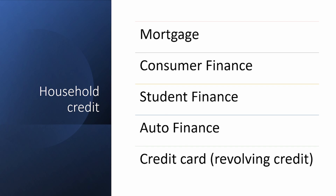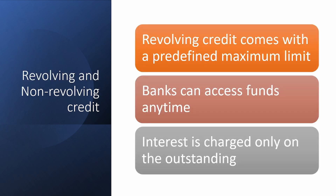Student finance lets students take loans to fund their education. Auto finance covers buying a car. Credit cards are a different kind of household credit — they are revolving in nature. Unlike mortgage, consumer finance, or student finance where you receive the entire loan amount upfront, with a credit card you don't get all the money at once. You have access to a certain limit but don't use it from day one, and you pay interest only on what you spend.